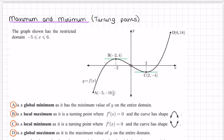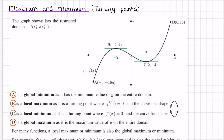Our next bit of content is on maximum and minimums, which are the turning points of functions. Looking at this diagram, it's just a bit of theory for this first page. We have this graph restricted by the domain from negative five to six. With maximums and minimums, we have global maximums and minimums, and we have local maximums and minimums.